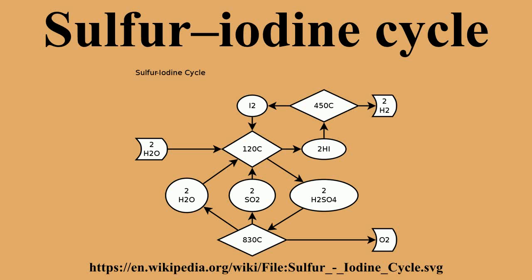The SI process is a chemical heat engine. Heat enters the cycle in high-temperature endothermic chemical reactions 2 and 3, and heat exits the cycle in the low-temperature exothermic reaction 1. The difference between the heat entering and leaving the cycle exits in the form of the heat of combustion of the hydrogen produced.